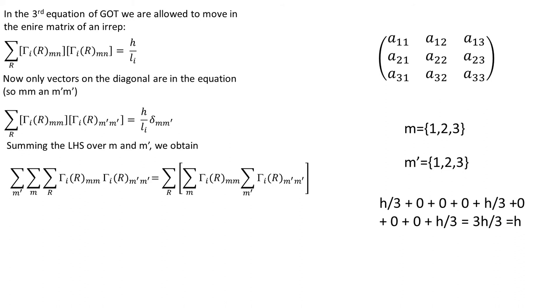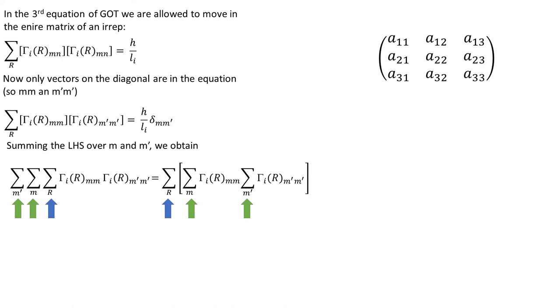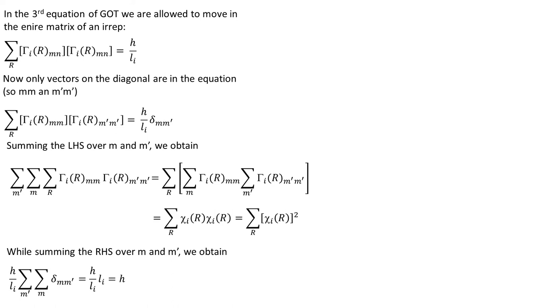As we've seen on the previous slide we can choose to do summation of terms on the diagonal first and then sum over R. The sum of terms on the diagonal is just a character. So we are done with the left hand side. The right hand side is easy. We have seen that there will always be Li times when summing over M and M prime returns H over Li.